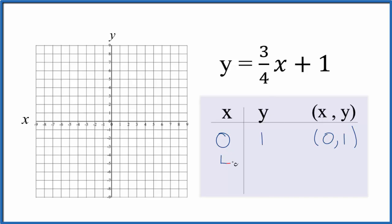But I think if I put four, three-fourths times four, fours would cancel out. That would be three plus one, and that's four. That's going to be easier to graph because it's a whole number.